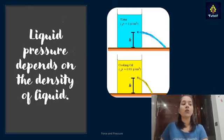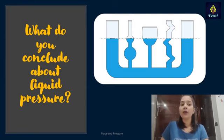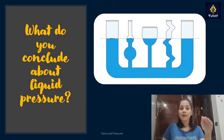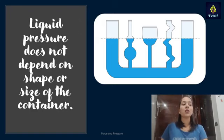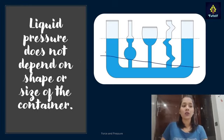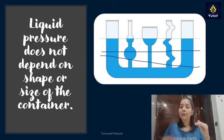We can conclude that liquid pressure depends on the density of the liquid. There was one more factor — area and shape. With different shaped containers at the same water level, a manometer placed at the same depth would show the same reading, because liquid pressure does not depend on the shape or size of the container. At a particular depth the liquid pressure is the same, and as depth increases it keeps on increasing.